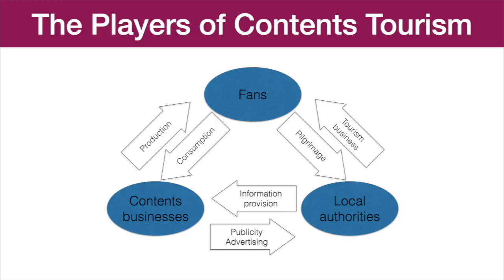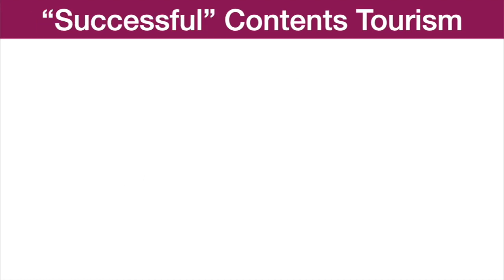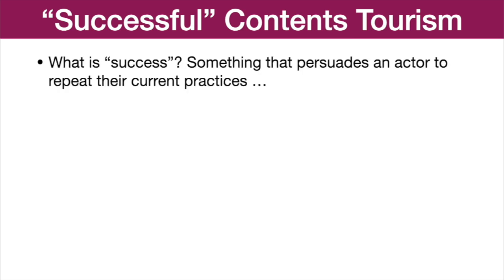So we've had a short introduction to what contents tourism is and how it became part of Japanese tourism policy. But how do we actually do contents tourism research? In contents tourism research, we examine the behaviours of and relationships between three main actors: fans, contents businesses, and local authorities. The fans are the people who travel. The contents businesses are the individuals or companies that produce the contents. And the local authorities are the municipalities who welcome tourists to sites within their jurisdiction. At a basic level, all three actors are seeking a successful contents tourism experience — success being something that persuades an actor to keep repeating their current practices.